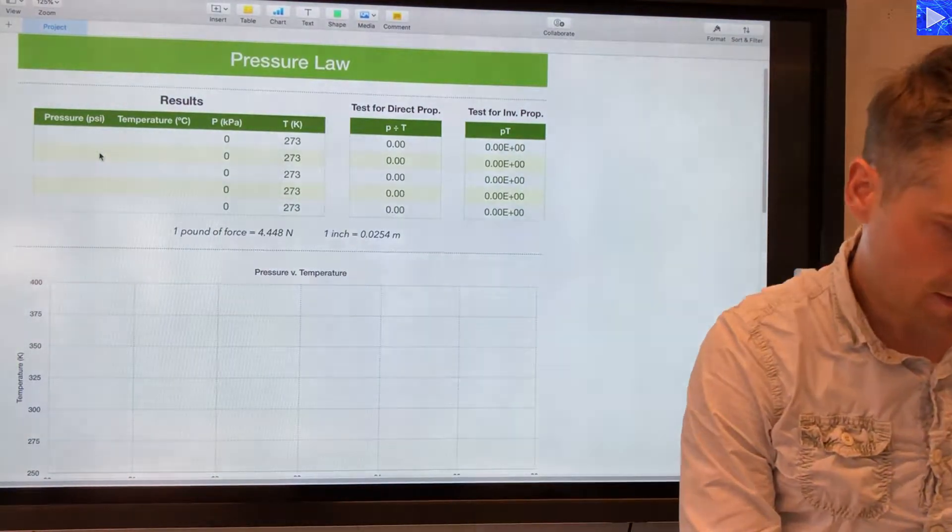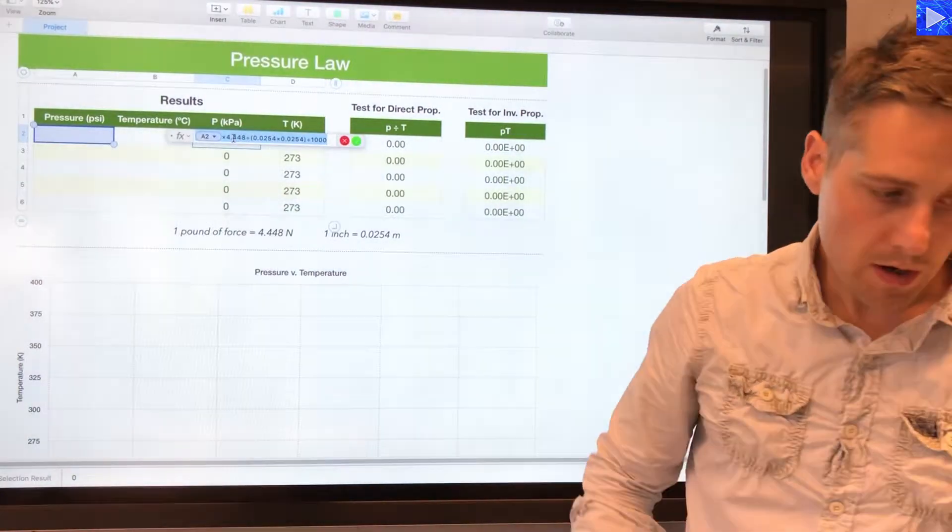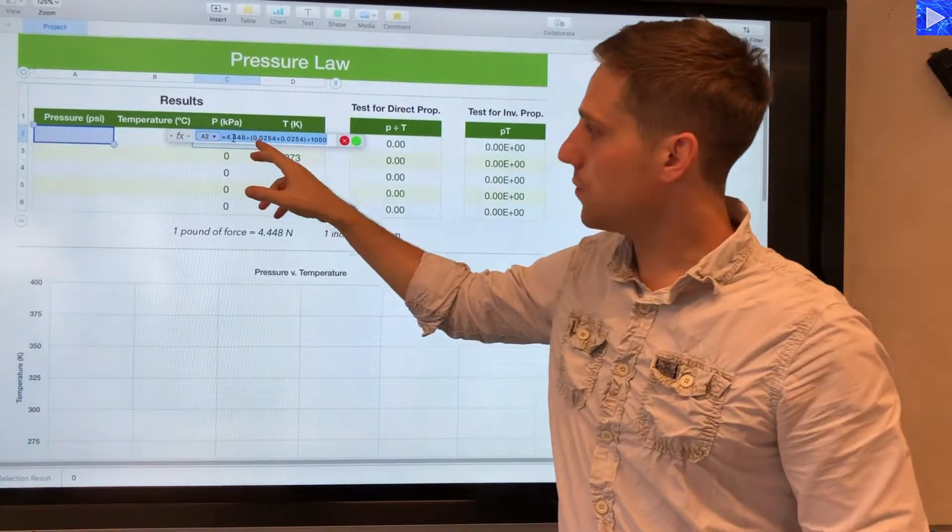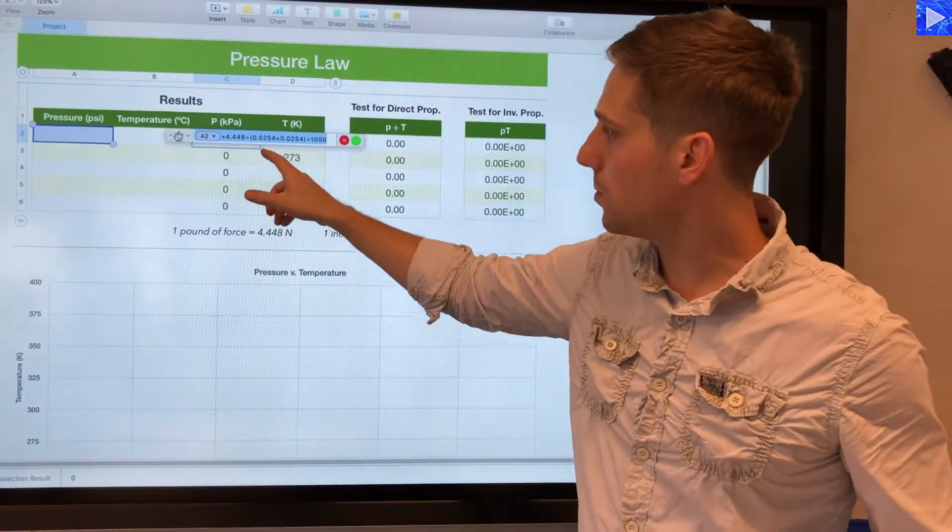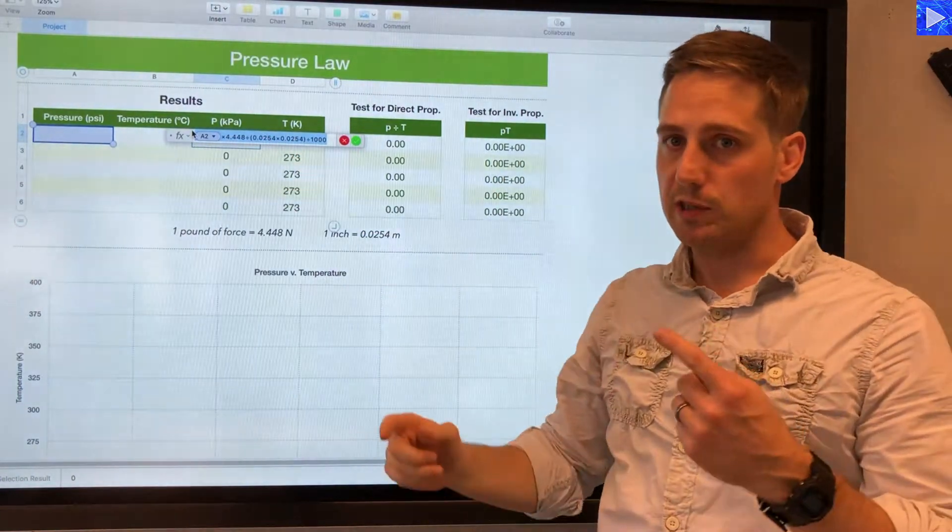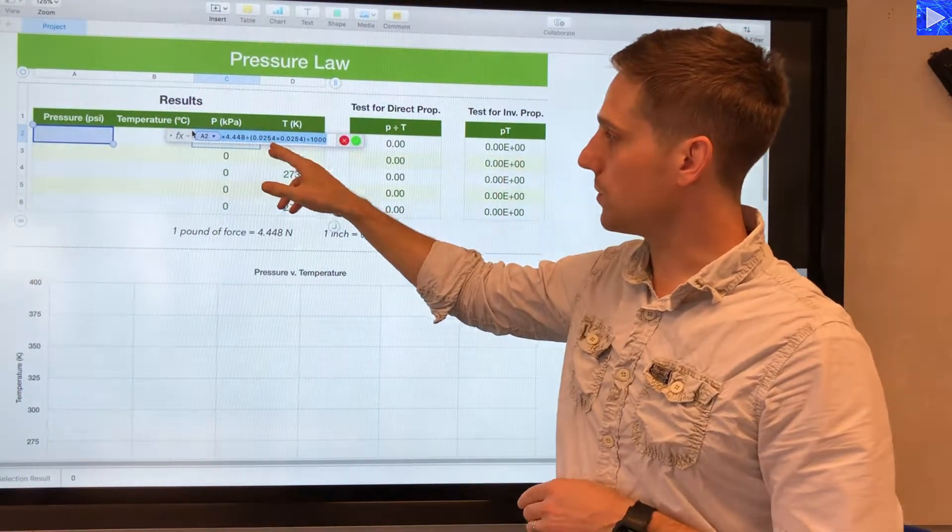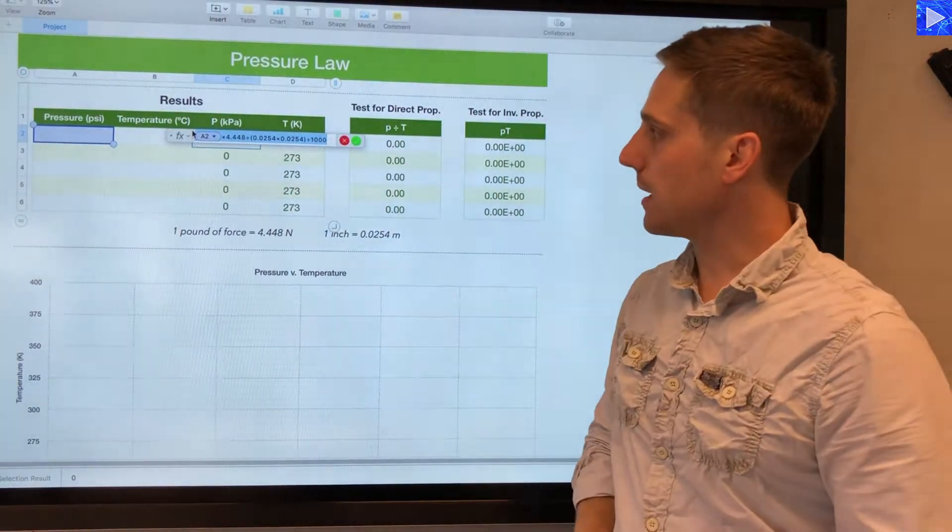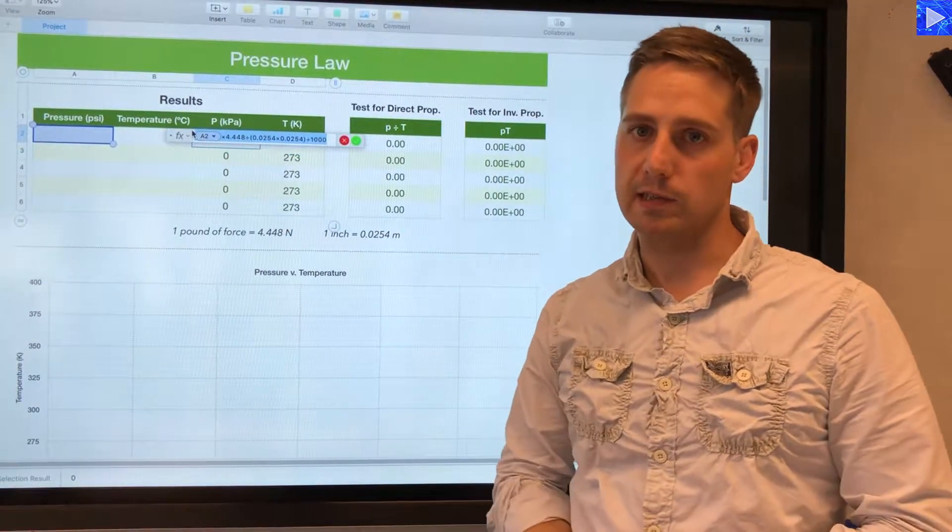Let me just show you that now. So I am multiplying the value in column A by 4.448, dividing by a square inch which is the square of 0.0254, this value here, and then dividing that by a thousand. That converts it to kilopascals for me.